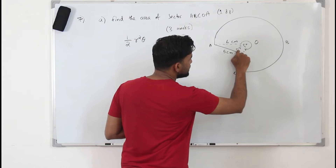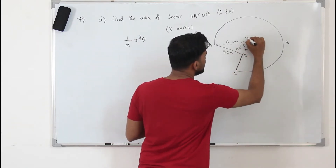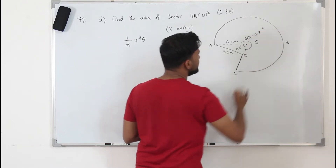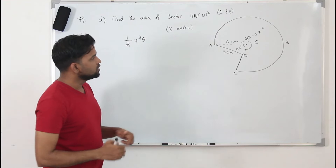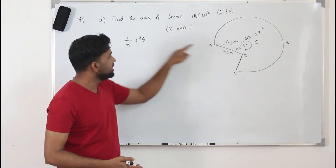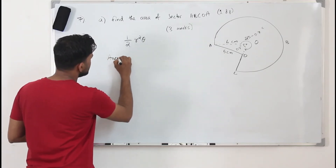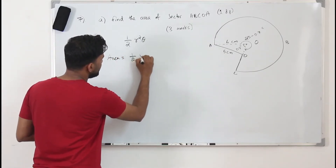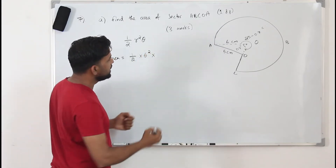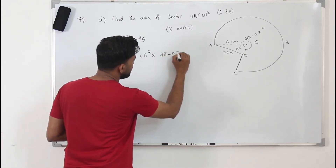So you can take 2π minus 0.7, and you will get this major sector angle. So this angle will be 2π minus 0.7 radians. Substitute here — our radius is 6 cm, so the area equals half times R squared, which is 6 squared, times theta which is 2π minus 0.7.